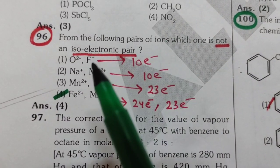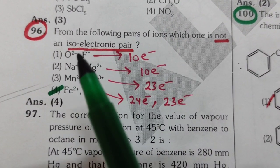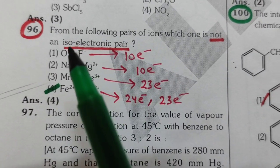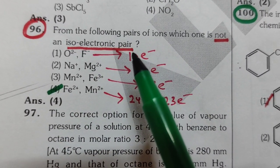Second question: which of the following is not an isoelectronic pair? Isoelectronic pair means having the same number of electrons. First one: